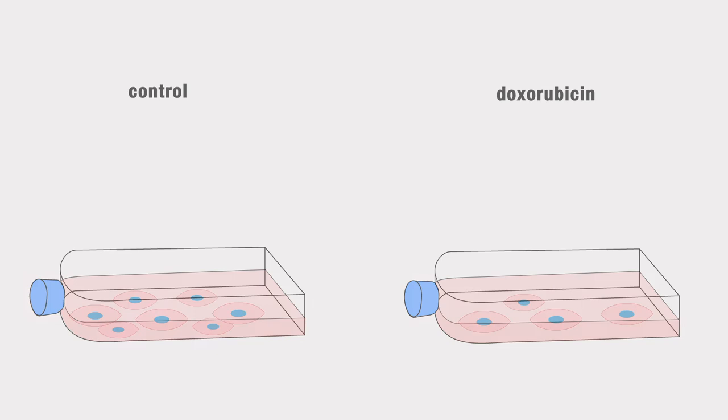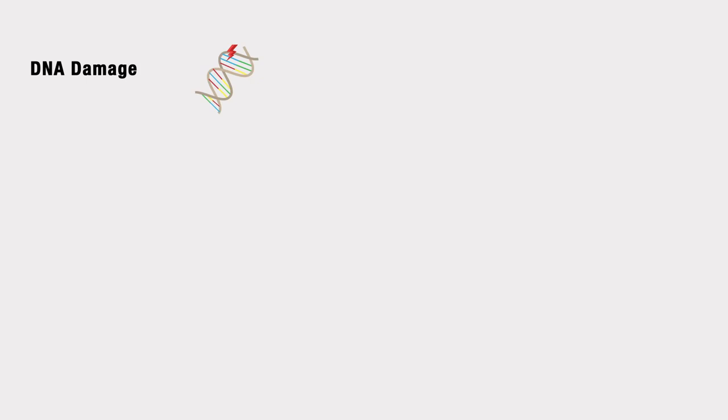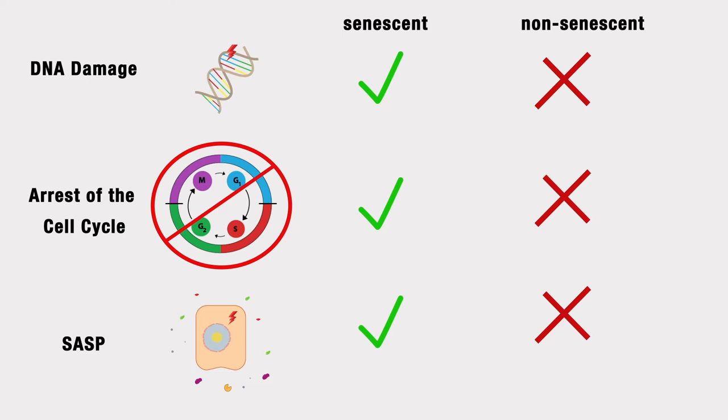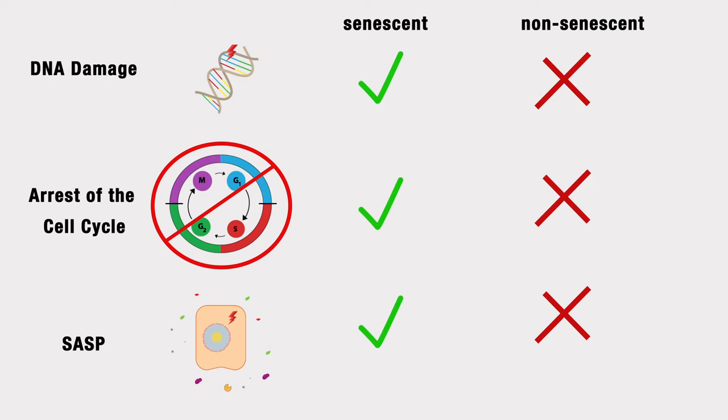So, how do we know if the cell model has worked? Well, let's think back to the major hallmarks of senescence. If we see evidence of each of these hallmarks in our senescent population, but not in our control population, we can be confident that we have successfully generated a good cell model, which can be used in our preliminary drug screen.